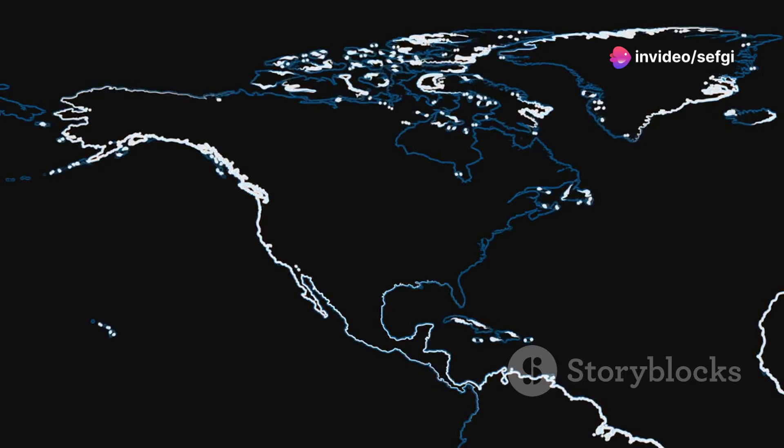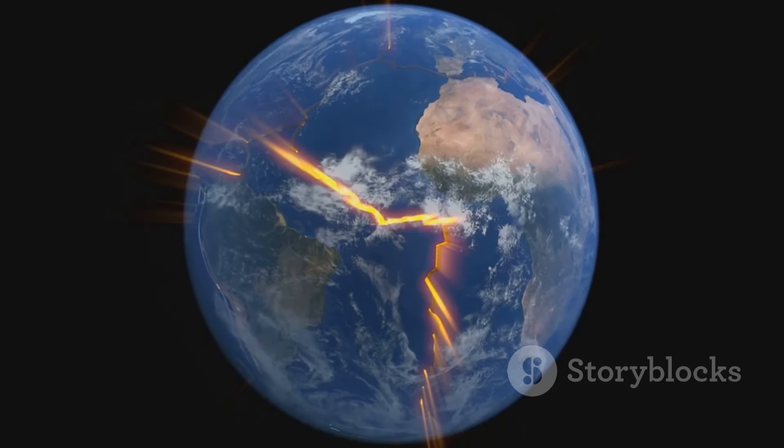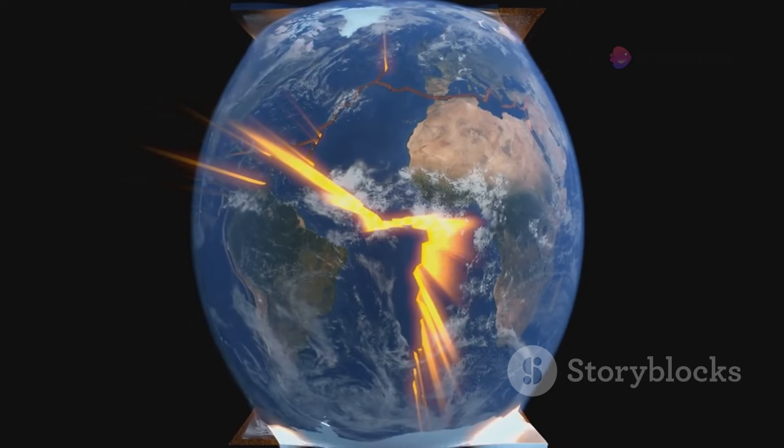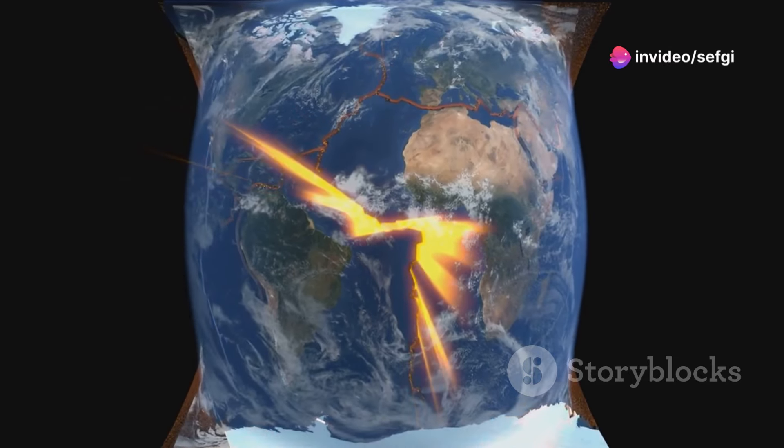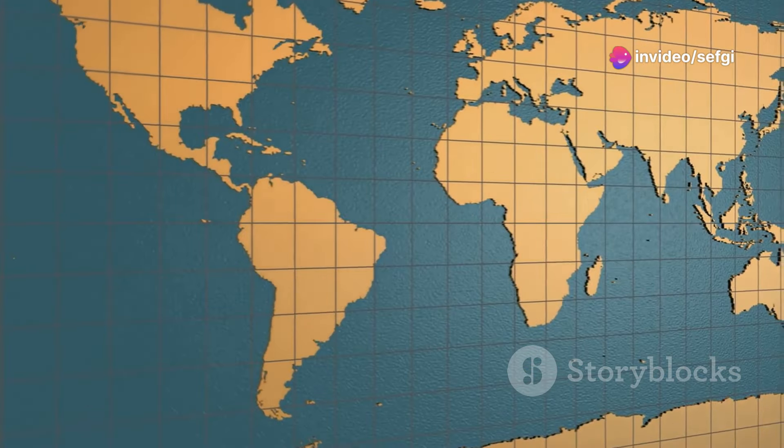Earth's continents are in constant motion. Yes, you heard it right. Our continents aren't fixed. They are riding on massive slabs of rock or tectonic plates that slowly but continuously drift across the molten mantle beneath. This process is known as continental drift.